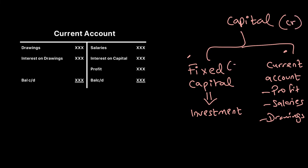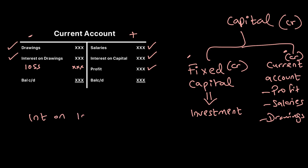Capital is credit in nature, so both the fixed capital account and the current account are credit in nature. Whatever the partners receive goes on the credit side of the current account; whatever reduces their capital goes on the debit side. Salaries and interest on capital go to the credit side; profits also go to the credit side. Drawings go on the debit side as they reduce capital; interest on drawings also goes on the debit side; losses reduce capital too. Interest on loan goes on the credit side since the partner is receiving it.